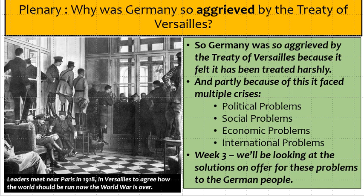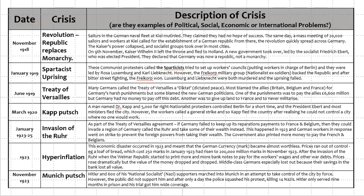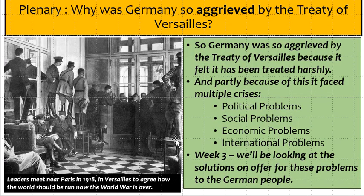There were partly problems that Germany faced because of the Treaty, but partly for other reasons that were political — for instance, problems like the Kapp Putsch or the Spartacist uprising. Social problems included unemployment or the crisis of hyperinflation causing real problems for Germany. You had the removal of the monarchy at the end of World War One as a political problem, and the Munich Putsch could be seen as another example.